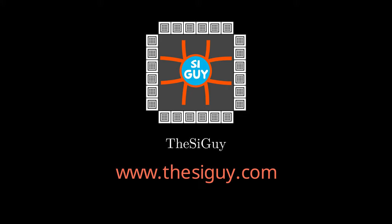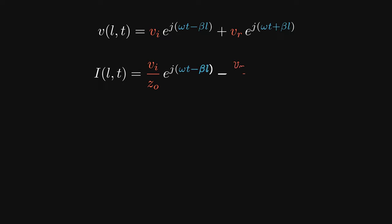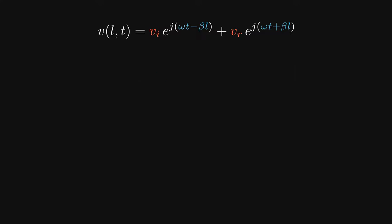In our discussion of transmission lines, we derived that the voltage wave traveling through the line is governed by the solution of the voltage wave equation — a forward traveling wave and a backward traveling wave. The current is the voltage wave divided by the characteristic impedance of the line, with a minus sign. When the input voltage signal is varying sinusoidally with respect to time, the signal is also varying sinusoidally with respect to distance along the line.